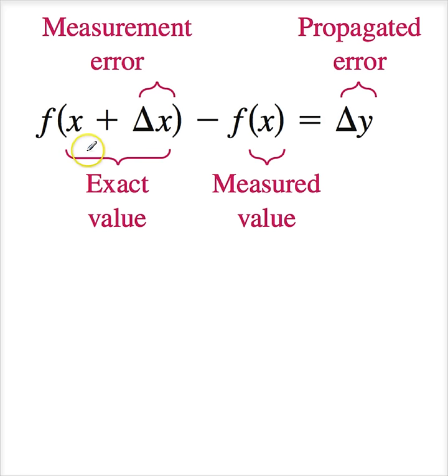I measure it and I get some f of x. But the actual real value is f of x plus delta x. So I measure radiuses or distances or something, and I'm getting a difference between the exact value. So let's call this right here my exact value.